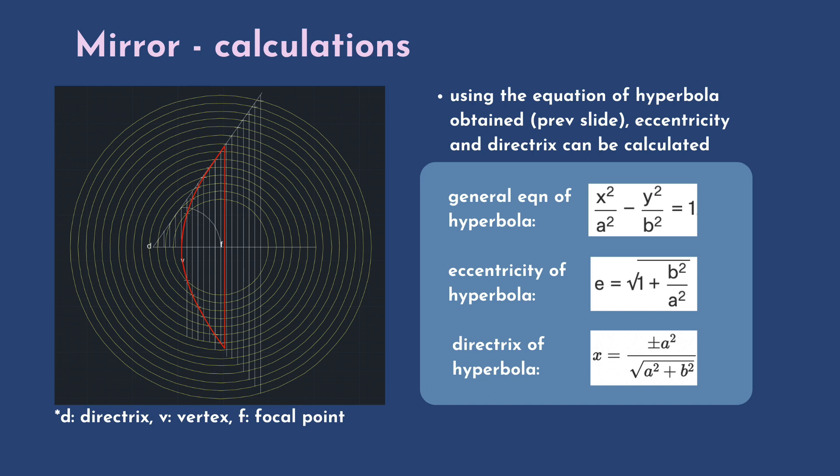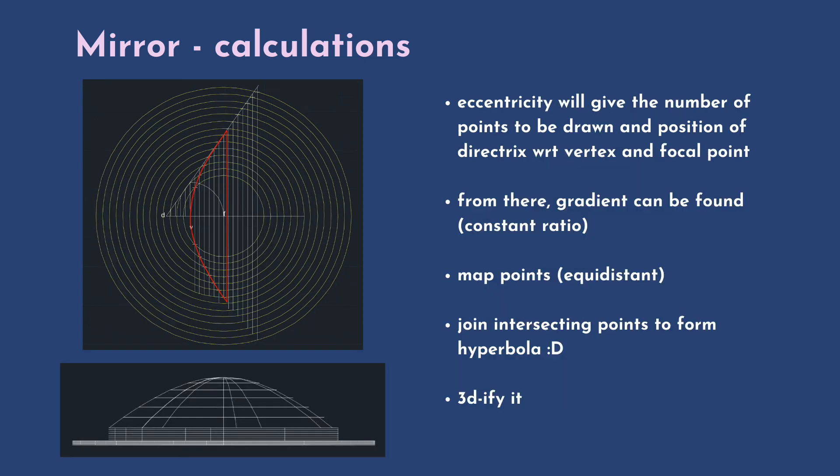After deriving the equation via hyperbola, we can find the eccentricity and directrix of the mirror using the following equations in order to design it. Eccentricity expressed as a constant ratio will give the number of points between the directrix, vertex and focal point of the mirror. For example, if the eccentricity is 3 through 2, the distance between the directrix and the vertex will be 3 units, and the distance between the vertex and the focal point will be 2 units. Using this constant ratio, the gradient of the curve can be found. By marking out the intersection points and joining them together, the hyperbola can be formed.